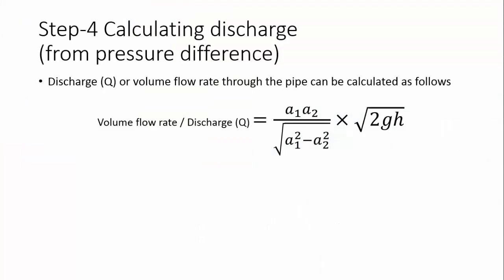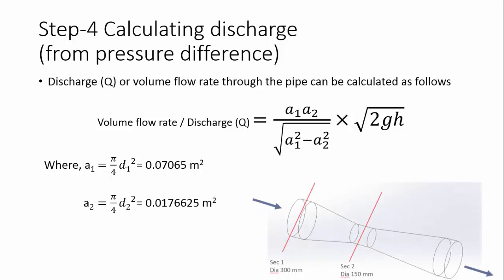Using the following formula, you can simply calculate the volume flow rate Q through the VentureMeter. Here, A1 and A2 are the area of the VentureMeter's inlet and throat respectively.